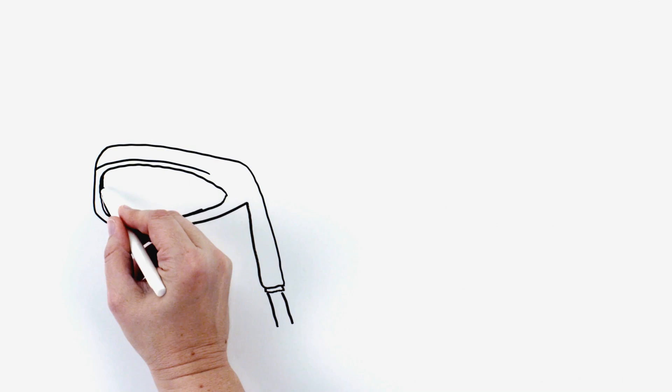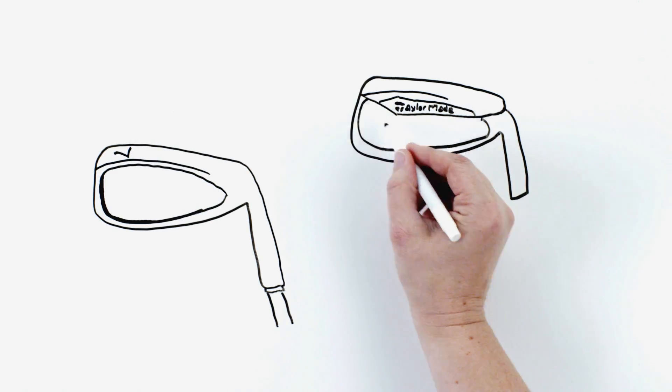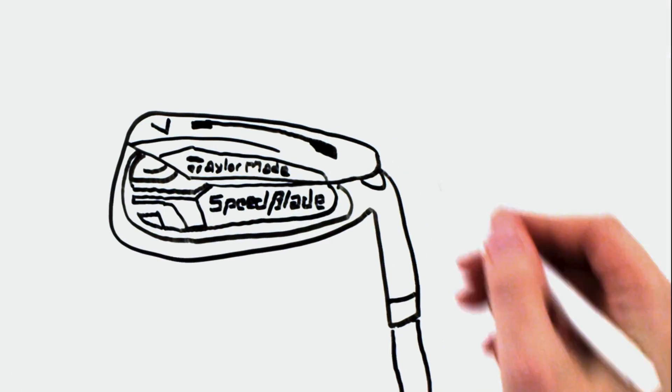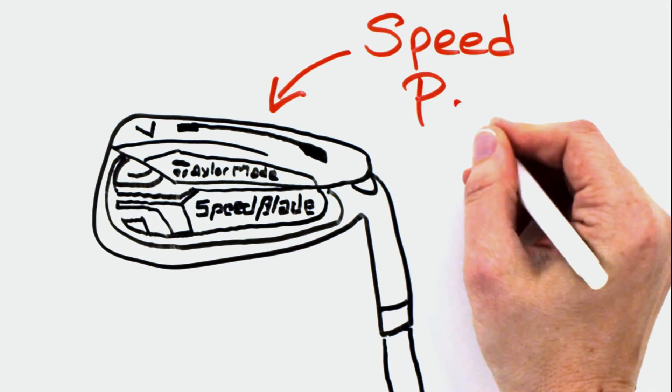This is what irons have looked like for 30 years. This is what a modern iron looks like. You see this? It's called the speed pocket.